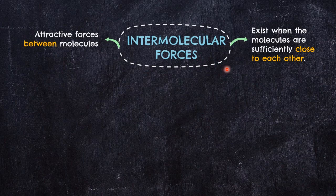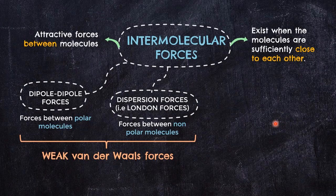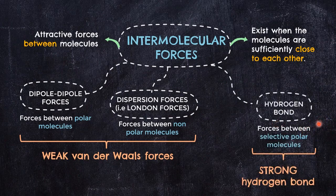There are three different types of intermolecular forces that you need to know. From these three types, we could divide them into two. First, known as weak van der Waals forces. This consists of dipole-dipole forces, which are forces present between polar molecules, and dispersion forces, also known as London forces, a type of force present between non-polar molecules. These two are weak forces. The other type is called hydrogen bond, which are forces present between selective polar molecules — the strongest intermolecular force of the three.